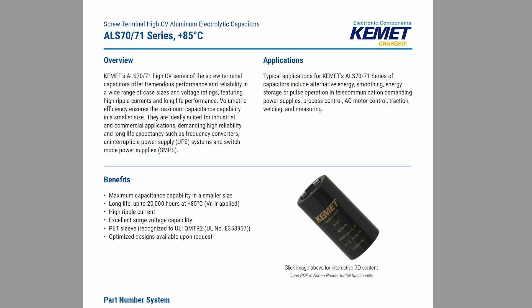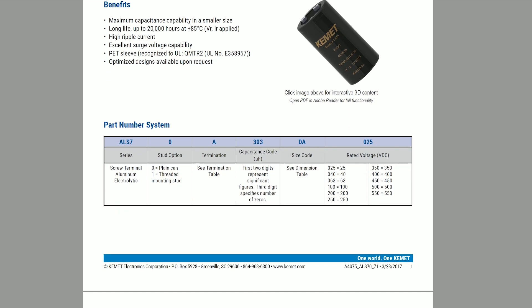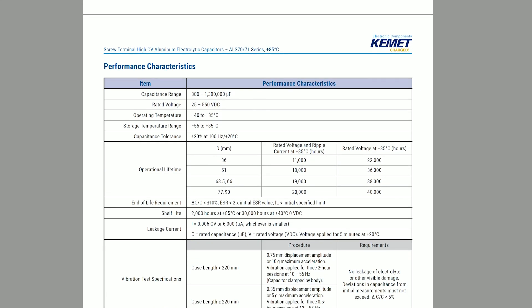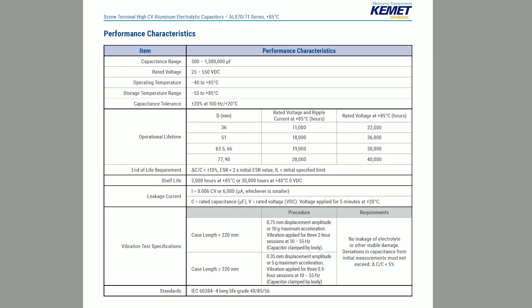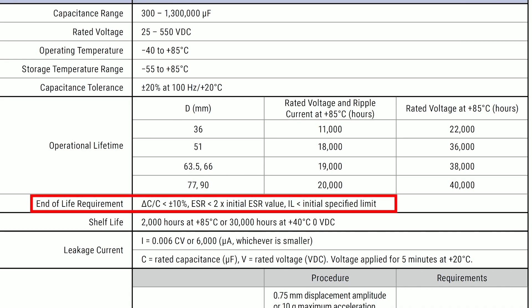Parametric failure comparisons should be made between manufacturers using the same criteria. Kemet's parametric failure criteria can be found in our series data sheet. For example, our ALS70 aluminum electrolytic high CV capacitor — we can take a look at the data sheet and see end-of-life on page two. The wording is a little confusing, but it shows that if one of the following conditions is no longer true, the capacitor is considered end-of-life.